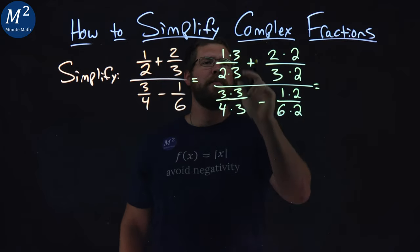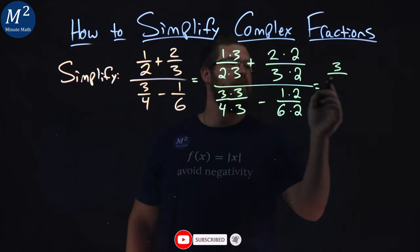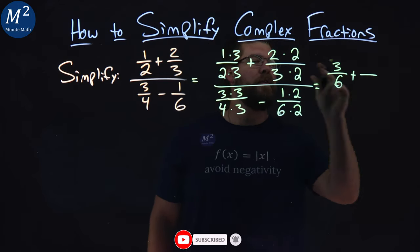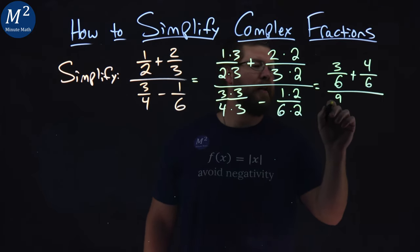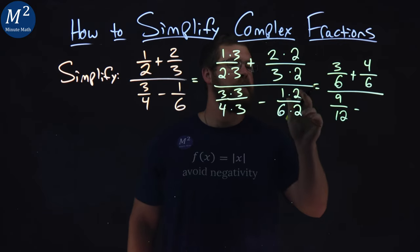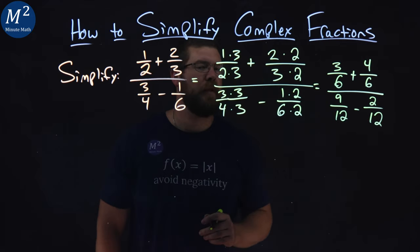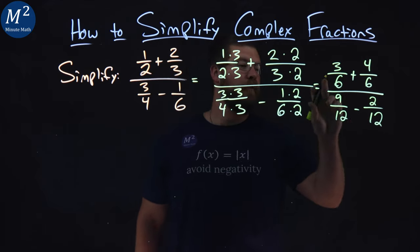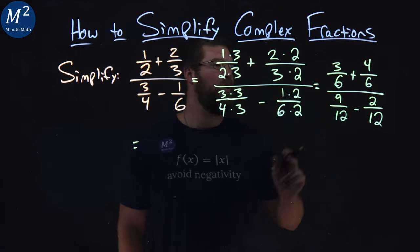From there, let's simplify. 1 times 3 is 3 over 2 times 3 is 6, plus 2 times 2 is 4 over 6. Here, 3 times 3 is 9, 4 times 3 is 12, minus 1 times 2 is 2, and 6 times 2 is 12. In each numerator and denominator, the fractions in them both have a common denominator. So let's keep on going.